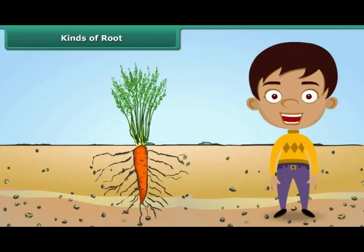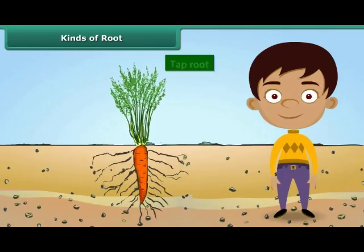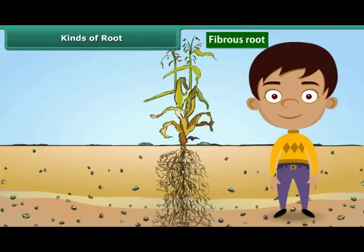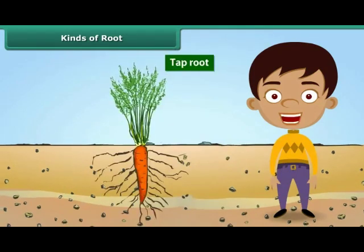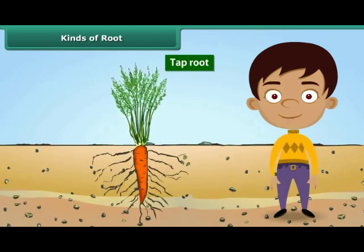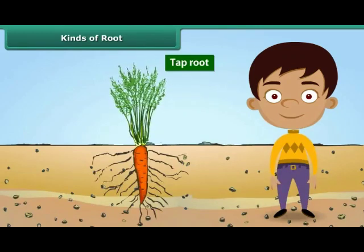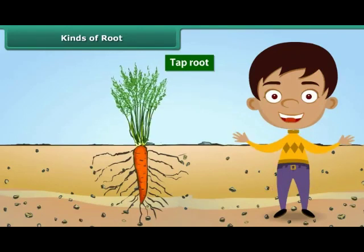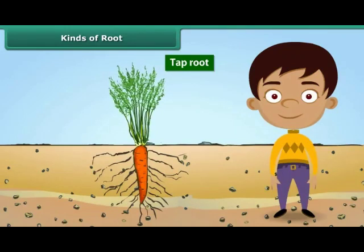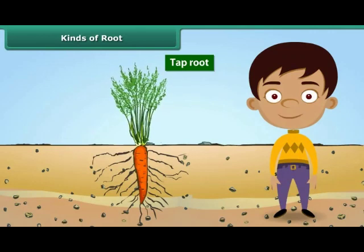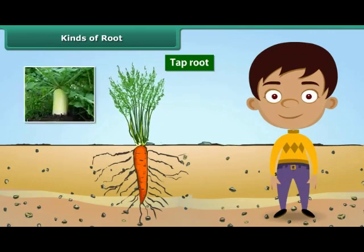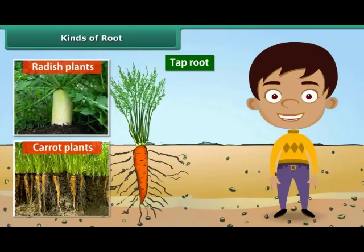Roots are of two types: tap roots and fibrous roots. A tap root is a single large root that grows straight down deep into the soil. A few small roots that branch from it are called lateral roots. For example, roots found in radish and carrot plants.